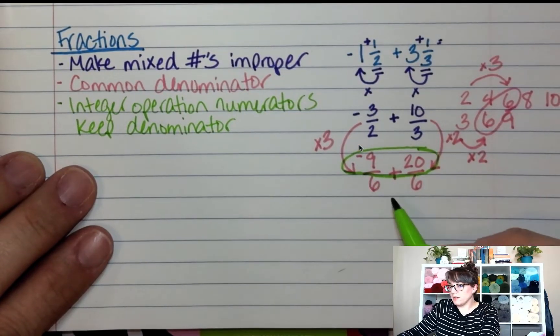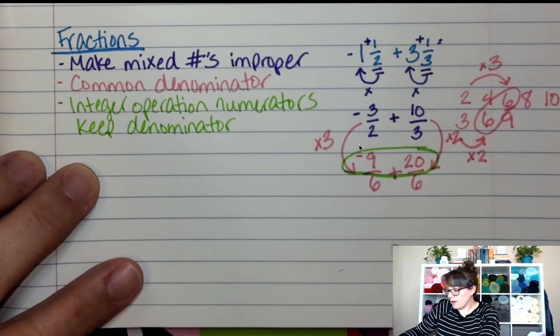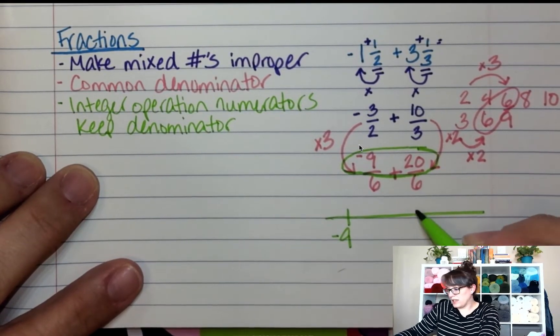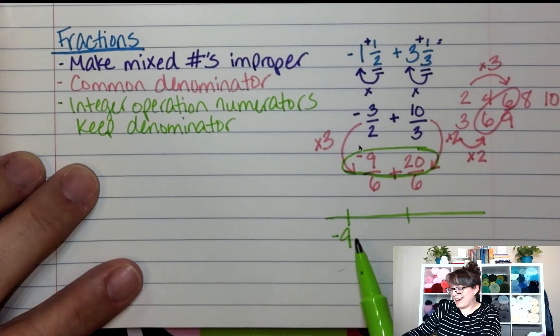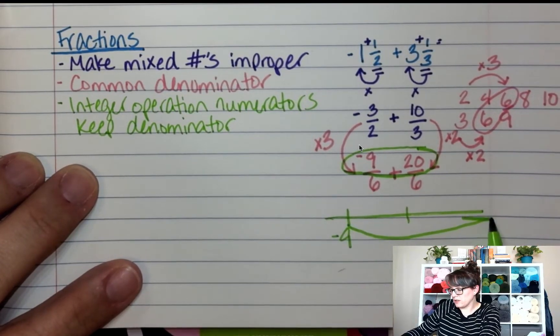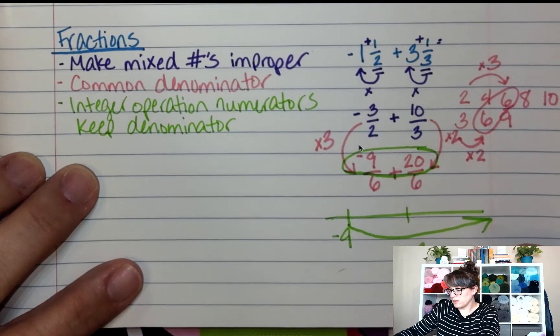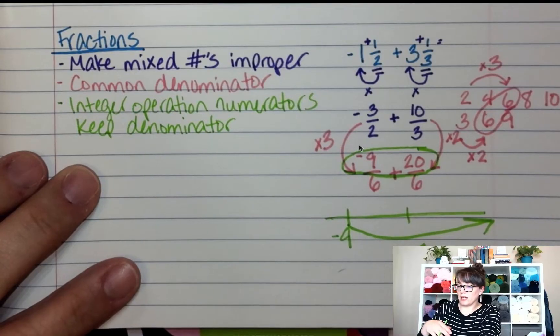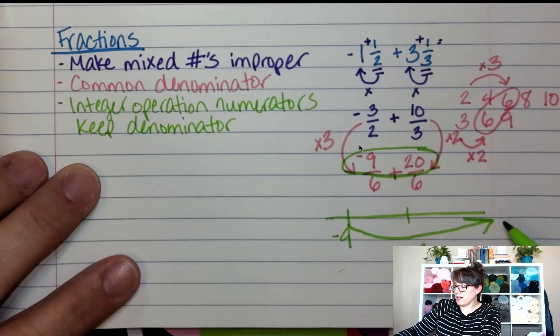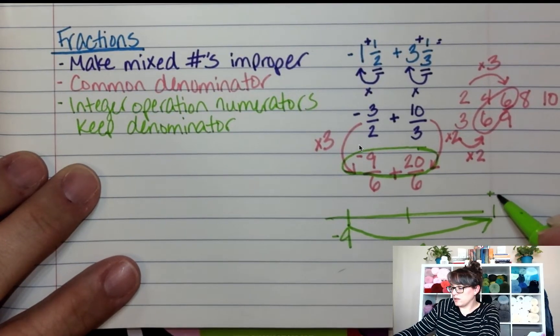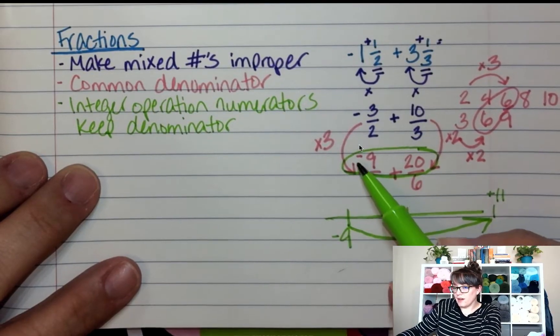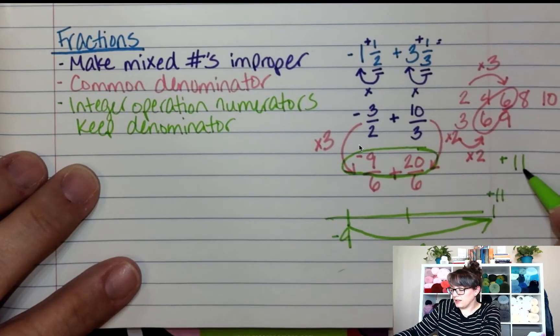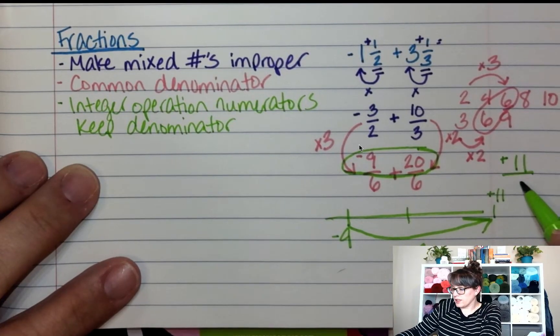So negative nine plus twenty. If I am on a number line, and I'm at negative nine, and here's zero. And I want to go twenty this direction. Where do I end up? Is it positive? Is it negative? You'd end up at positive eleven. And so negative nine plus twenty is positive eleven over six.